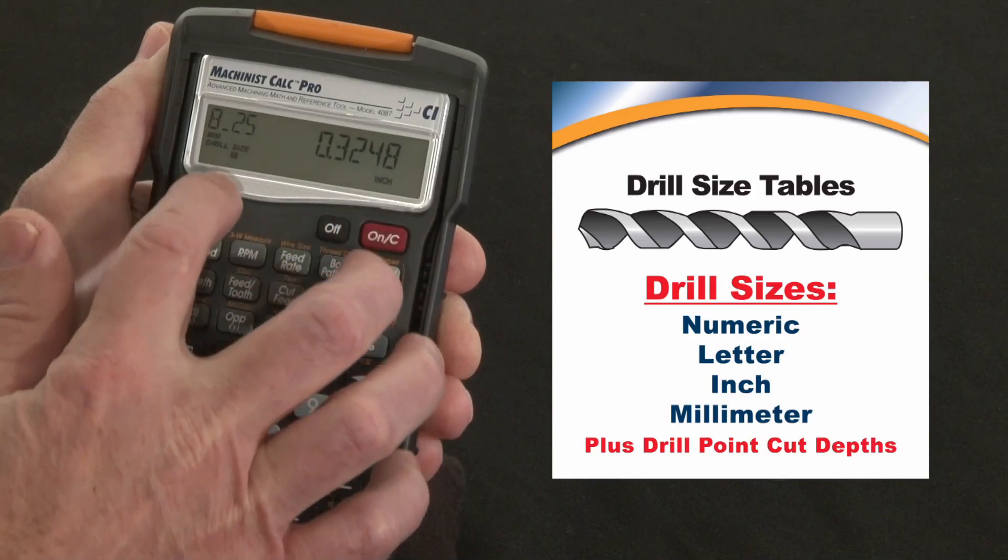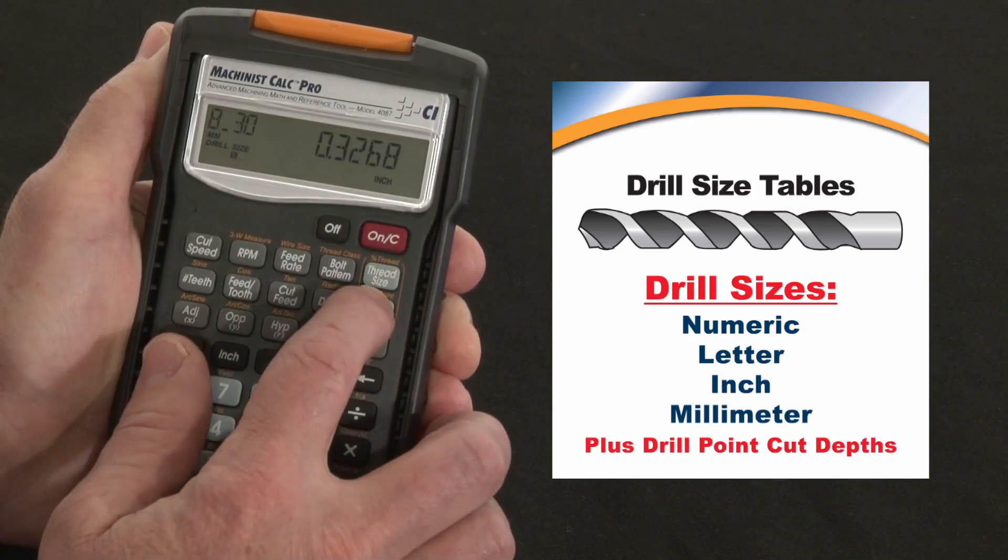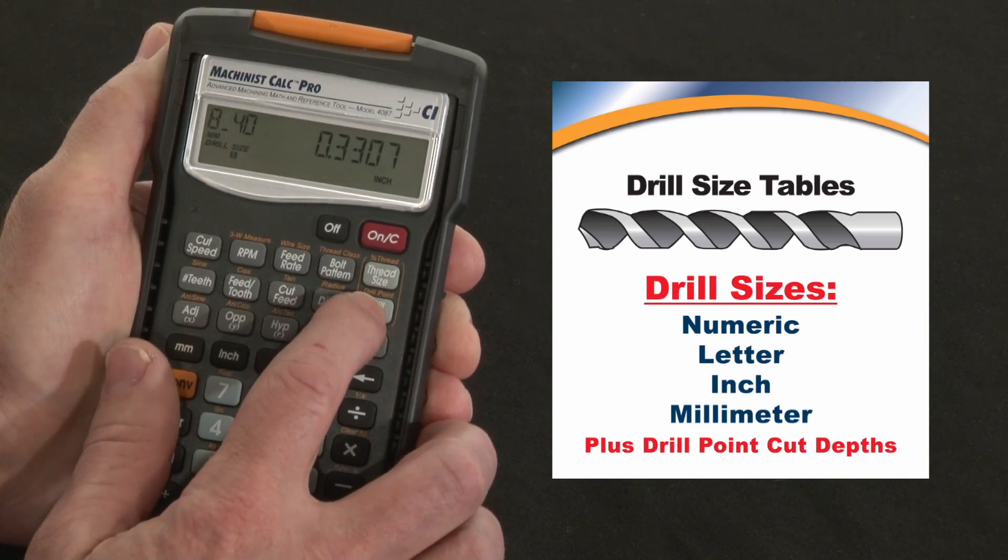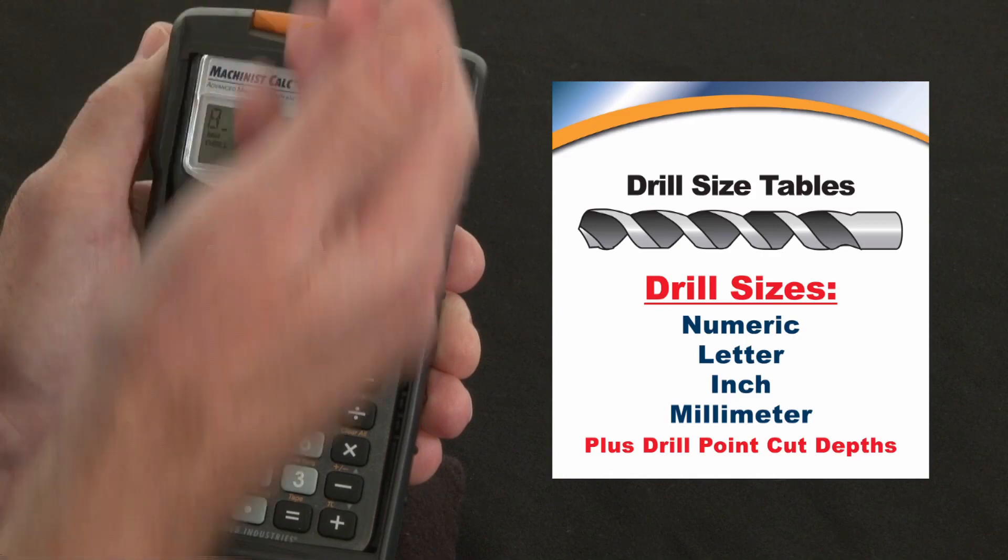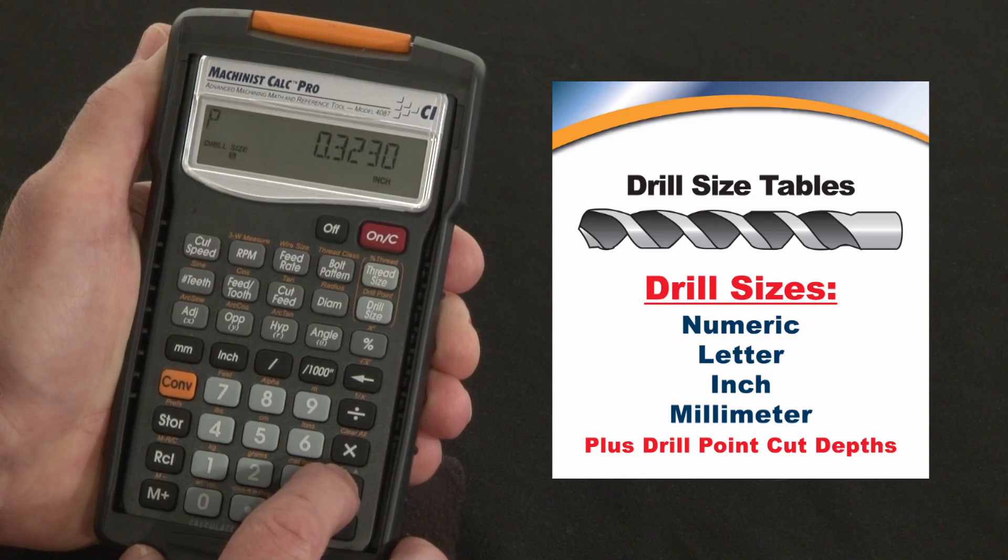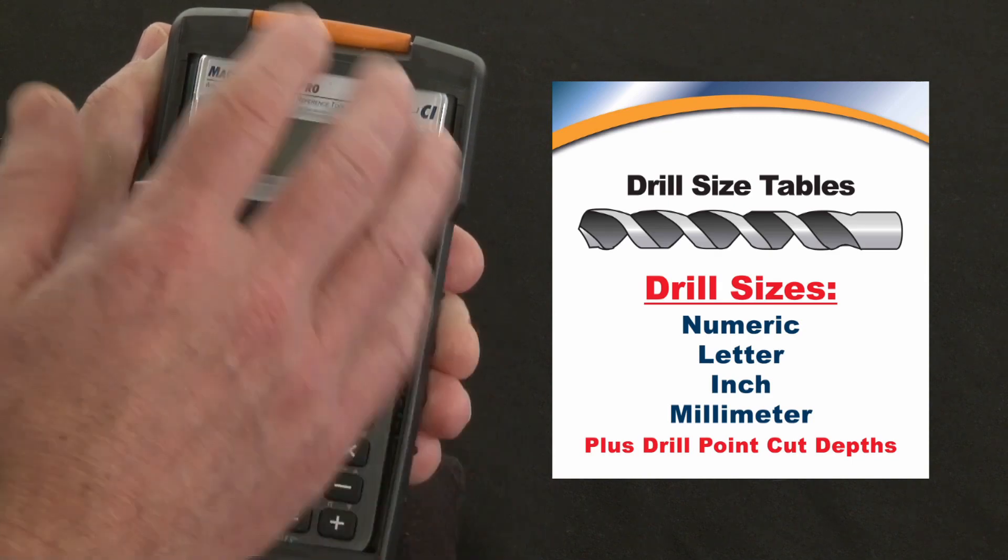That's an 8.25mm drill size. I can press it again, 8.3 is the next bigger size, 21/64 is right above that, 8.4 is above that, so I can go all the way up the drill chart. Using the plus and minus keys down here, I can go with the minus key back down the drill chart. Size P, size 8.20, 8.10, size O. This works up and down the chart.